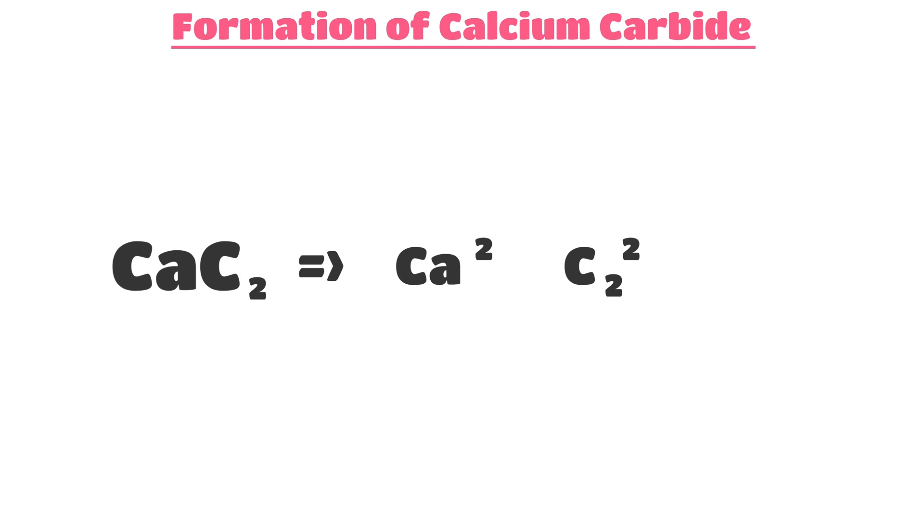Remember, the charge of a radical is the same as the valency of that radical. So first, we have the common divisor for the valencies—because each of them is two, we divide by two to get one, one.